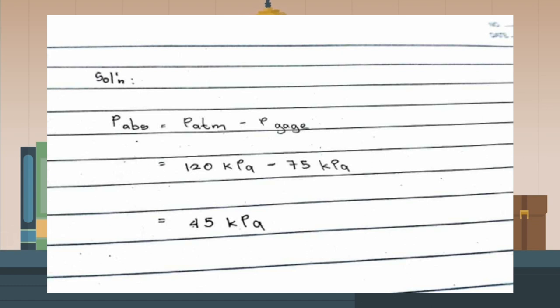So the value of P atmosphere is 120 kPa minus the value of P gauge which is 75 kPa. So 120 kPa minus 75 kPa equals 45 kPa.